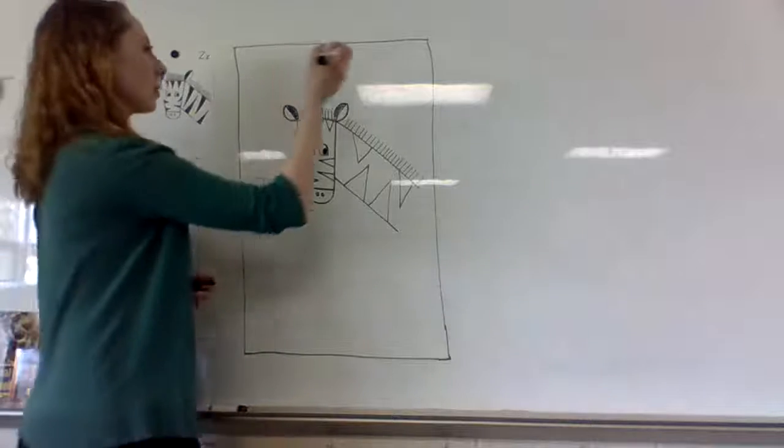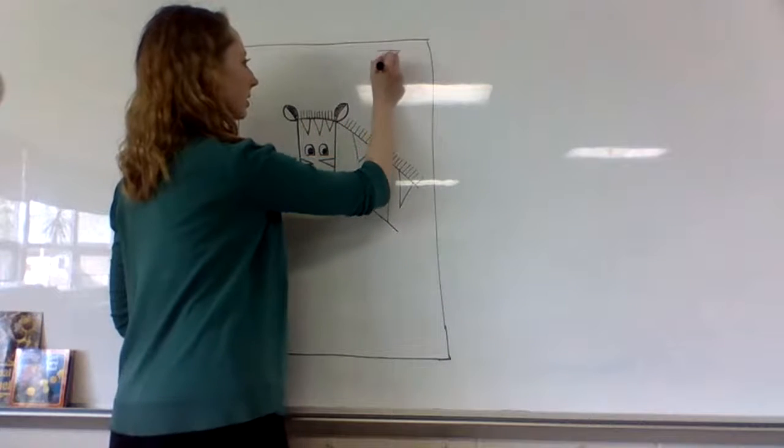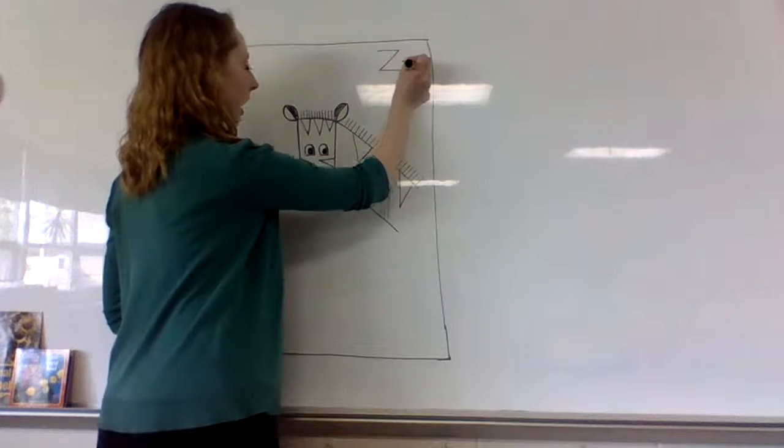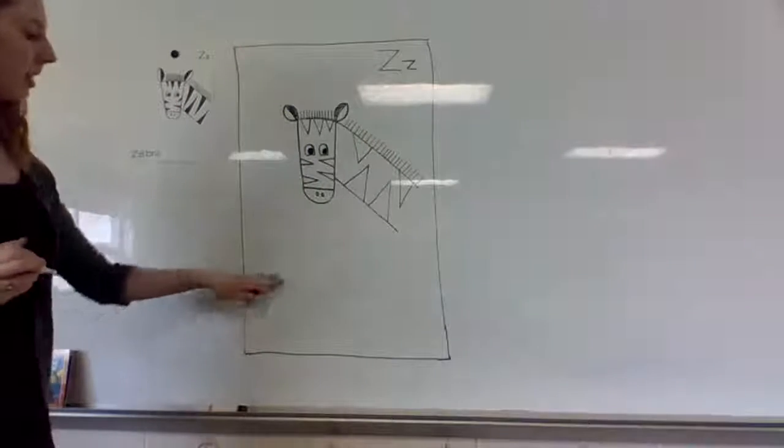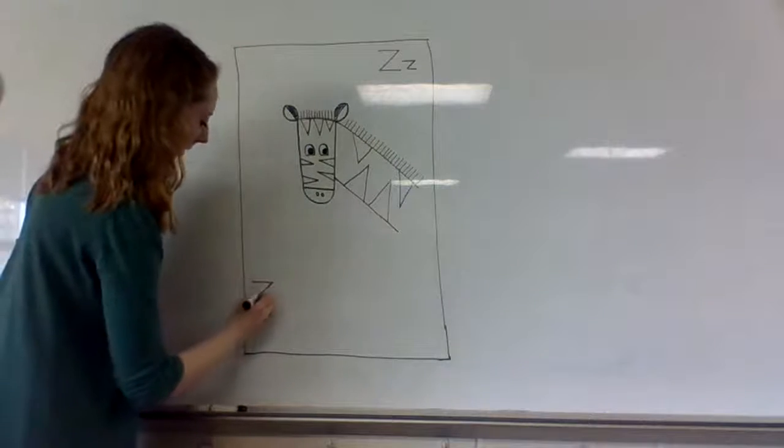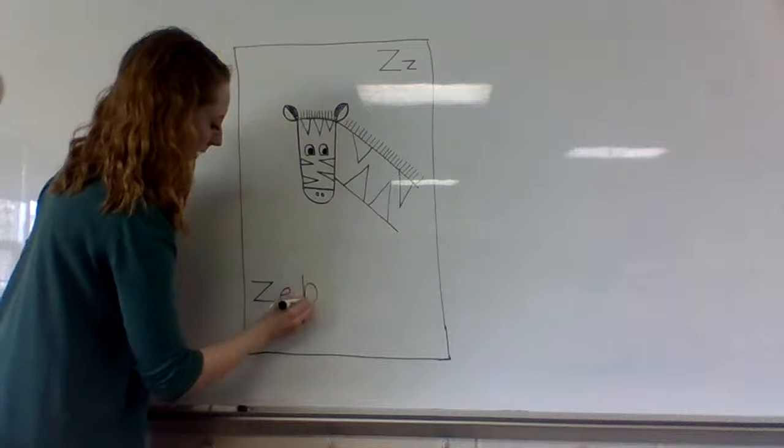The last thing we want to do is write our Z's up in the top right corner—capital and lowercase. Then down at the bottom, we want to write zebra: Z-E-B-R-A.